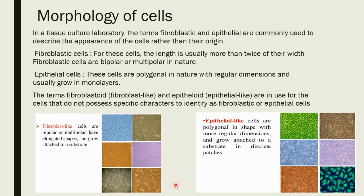Morphology of cells: in tissue culture laboratories, the terms fibroblastic and epithelial cells are commonly used to identify fibroblastic-like cells and epithelial-like cells. Fibroblastic-like cells have a length usually more than twice the breadth — that is, the width is very small and the length is twice of it. Epithelial-like cells have regular dimensions, are polygonal in nature, and usually grow in monolayers. If cells do not fit either category, we can term them fibroblastoid and epitheloid.